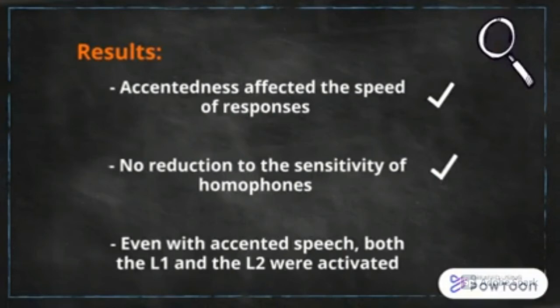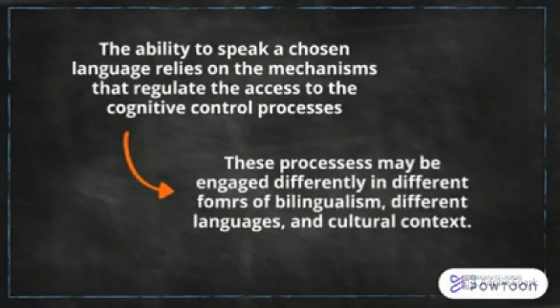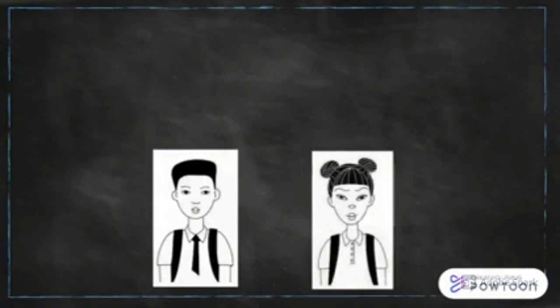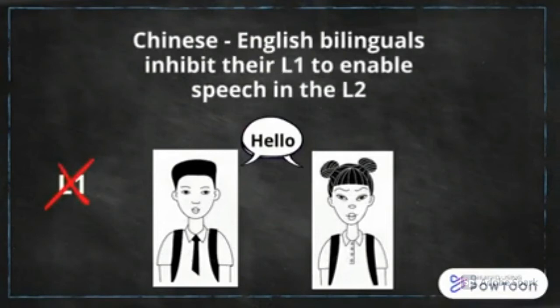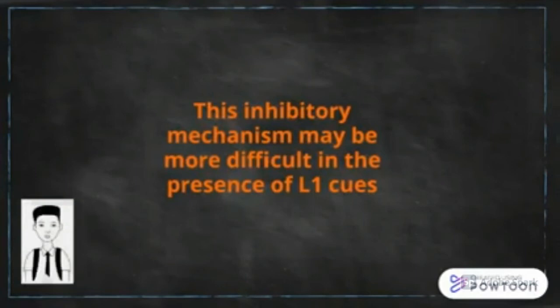The ability to speak a chosen language relies on the mechanisms that regulate the access to cognitive control processes. These processes may be engaged differently in different forms of bilingualism, different languages, and cultural contexts. In the case of Chinese-English bilinguals, in which English is the L2, whenever they want to speak English, the L1 is blocked somehow — these bilinguals inhibit their L1 to enable speech in the L2. This inhibitory mechanism may be more difficult in the presence of L1 cues; for example, if these bilinguals are trying to explain a Chinese concept in English, the L1 may be activated.